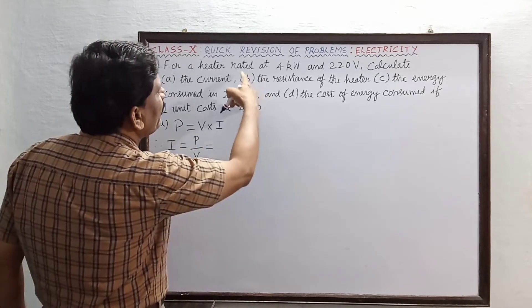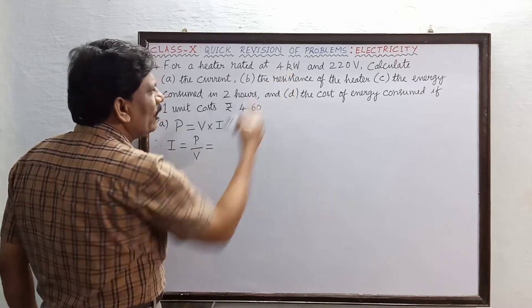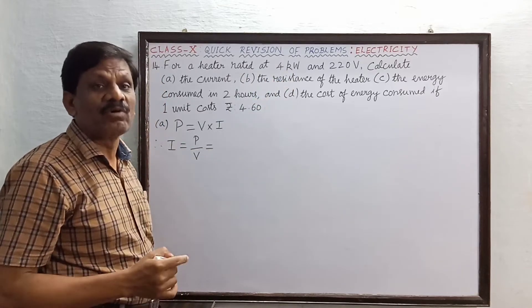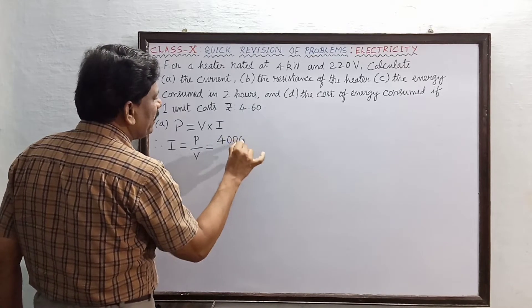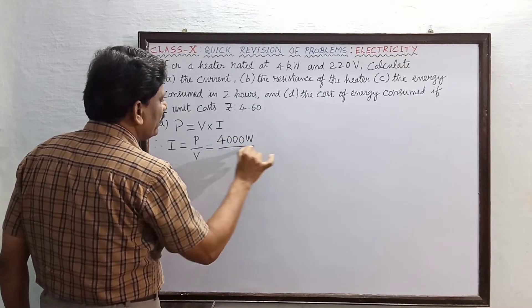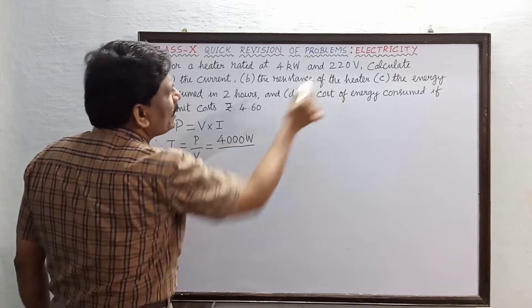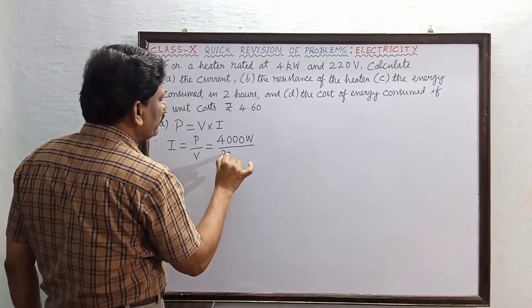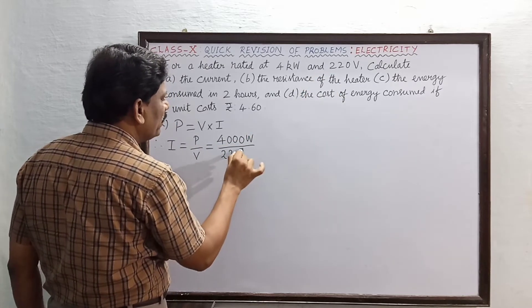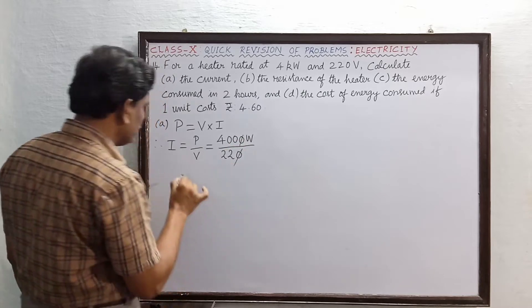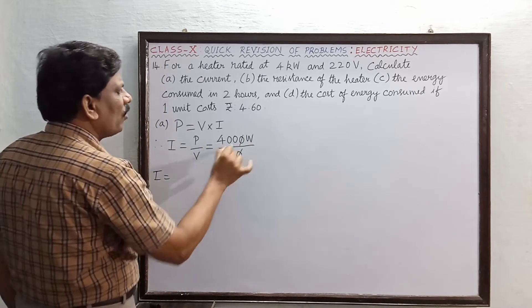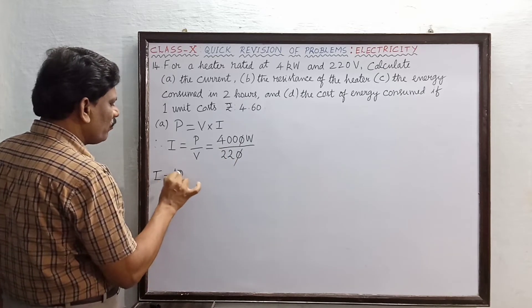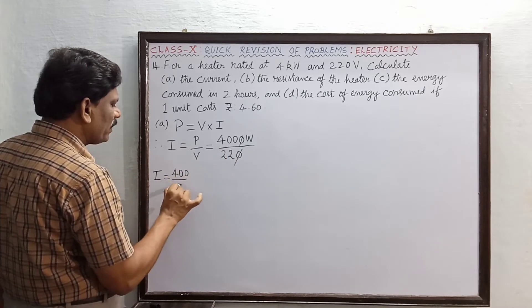What is the power of the heater is given as 4 kilowatt. 4 kilowatt means 4000 watt. So this is 4000 watt divided by the voltage is 220. We can cancel these two zeros. I is now equal to 400 by 22. 400 divided by 22.